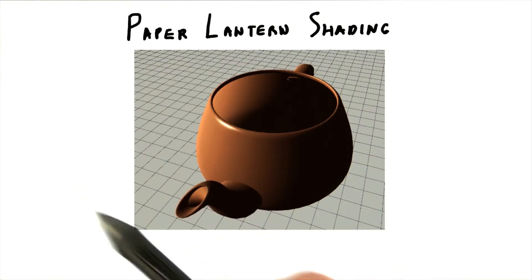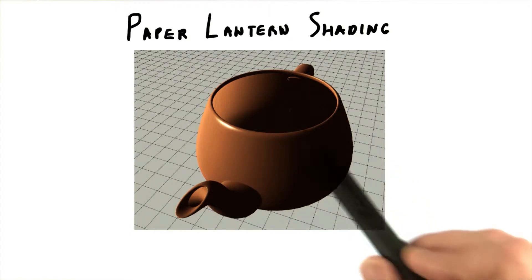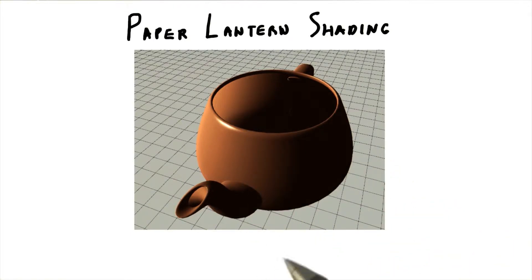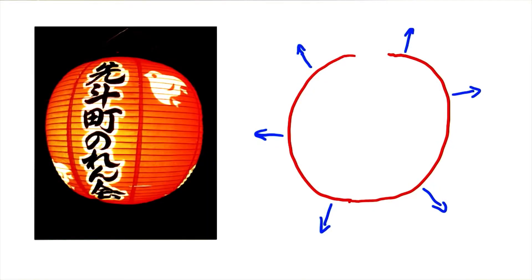That is, all the normals point outwards, regardless of whether we're looking at the inside or outside. This is certainly not how the real world works. I call this the paper lantern effect, where the surface is sort of like a paper lantern, looking the same on both sides.